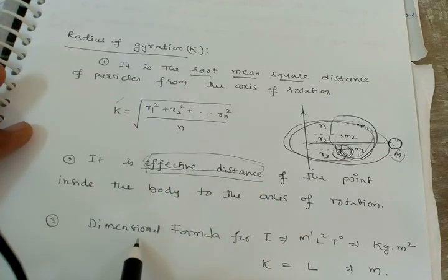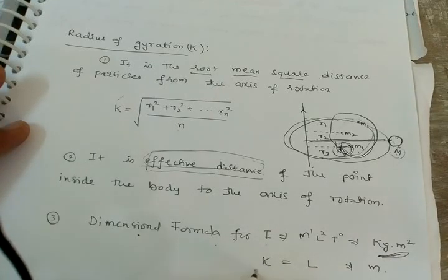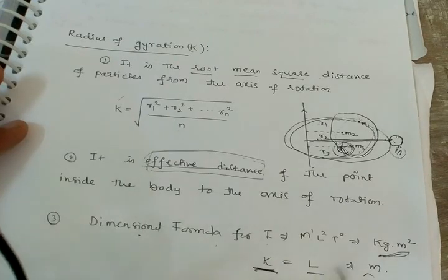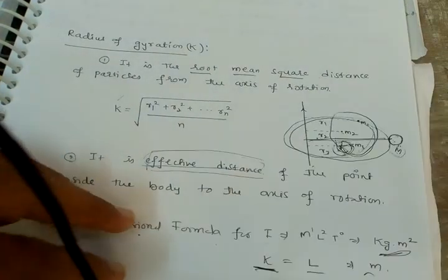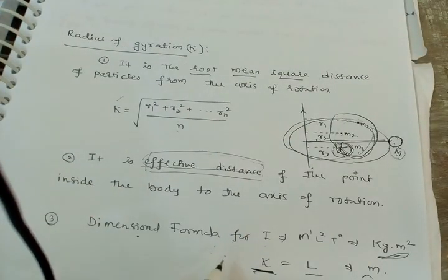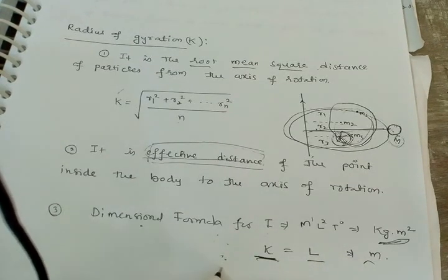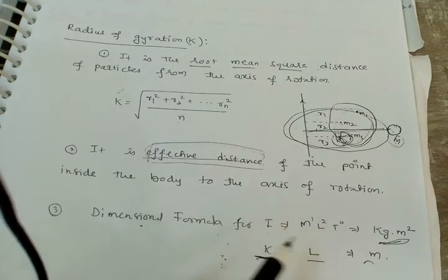The dimensional formula for moment of inertia is M¹L²T⁰, and the SI unit is kilogram meter squared (kg·m²). The dimension of radius of gyration k is simply L. These are the important points about moment of inertia for a rigid body. In the next class I am going to explain theorems on how to calculate moment of inertia — there are two theorems which I will cover in the next video.